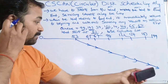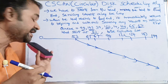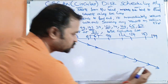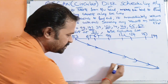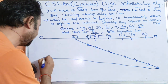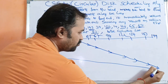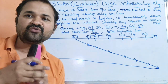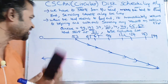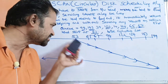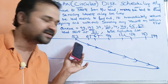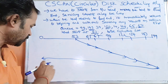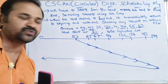After reaching 199, we move back to the beginning of the disk. The beginning cylinder is 0. So the head moves back to the starting end — cylinder 0 — without servicing any requests. Now we need to serve the remaining requests from 0 to 53, because initially we started from 53 and serviced all requests from 53 to 199.